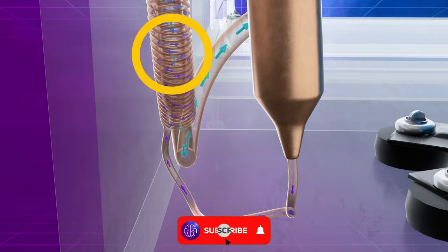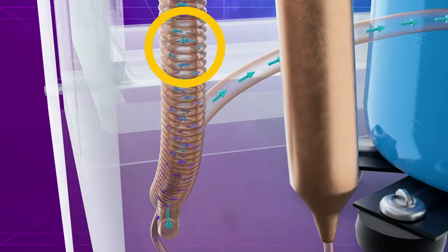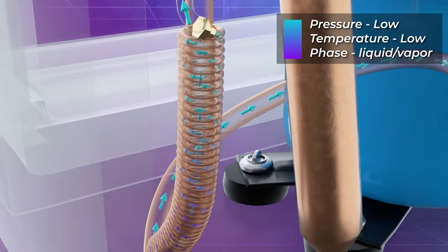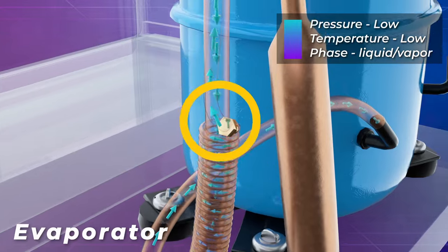As the refrigerant flows through the capillary tube, its pressure drops significantly and it enters the evaporator section as a low-pressure, low-temperature, liquid vapor mixture.